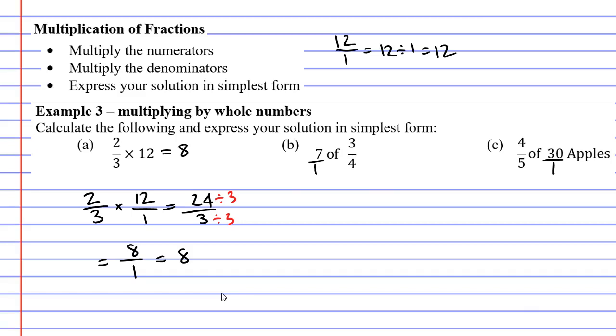Let's now move on to question B. We had the whole number 7, which is rewritten as 7 over 1, and we're multiplying this by 3 over 4, because the word of just means to multiply.